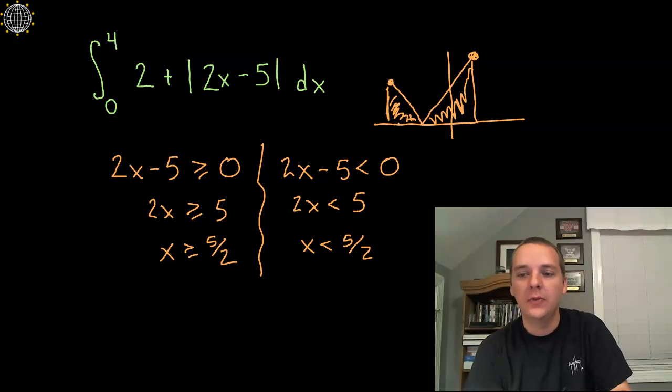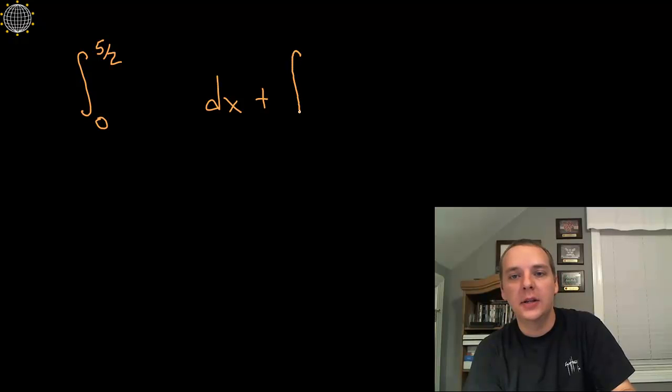So it's pretty clear the new vertex is at 5 halves, so we're going to do 1 integral from 0 to 5 halves dx, plus the integral from 5 halves on the rest of the way to 4 dx.